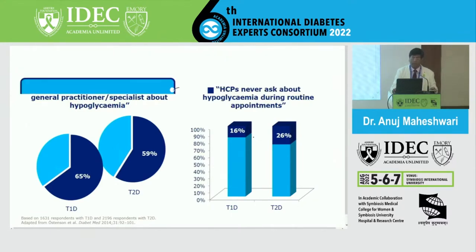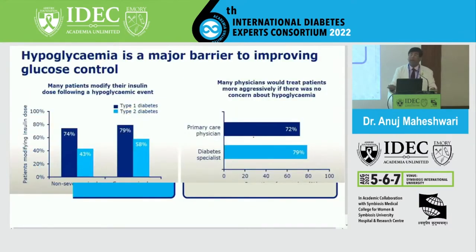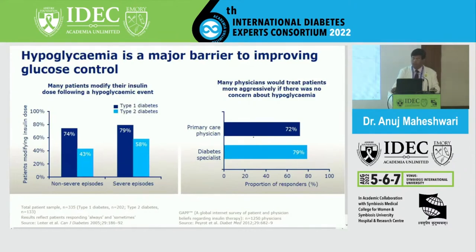Hypoglycemia is a major barrier to improving glucose control. Many patients modify their insulin dose following a hypoglycemic event, and many leave insulin altogether after such an event. This is why clinicians try not to prescribe medications that may lead to hypoglycemia, which itself remains an important reason for poor diabetes control in many patients.